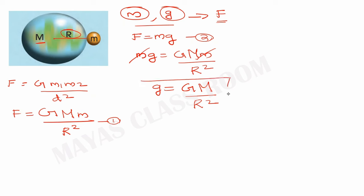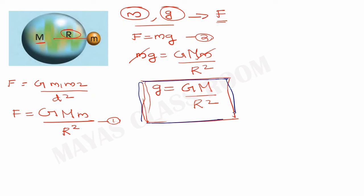Now this is the equation of g. The acceleration due to gravity is given by the equation: g is equal to G times M divided by R squared. This is very important. What is G? G is the gravitational constant.